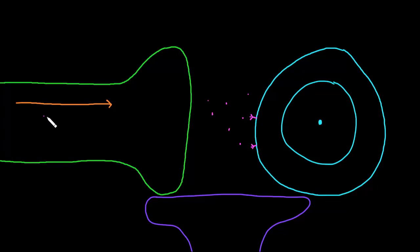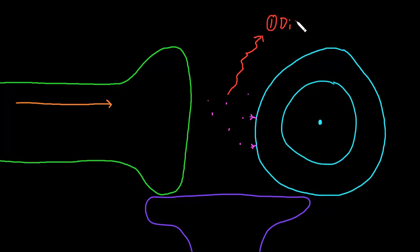But if a neuron is firing action potentials very frequently, if there are large numbers of action potentials reaching the axon terminal, then the rate of neurotransmitter release into the synapse may exceed the rate that neurotransmitter can just passively diffuse out of the synapse. So diffusion is the first method by which neurotransmitter can be removed from a synapse, but that only works if the neuron is firing action potentials at a slow frequency. At a fast frequency, diffusion won't be enough.